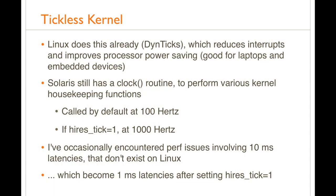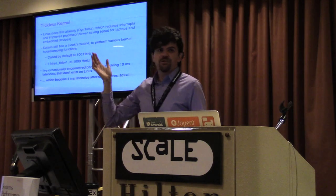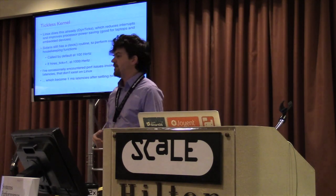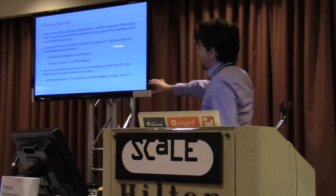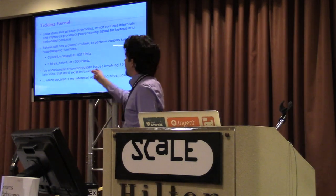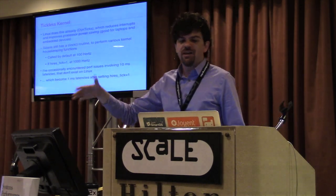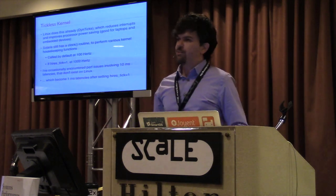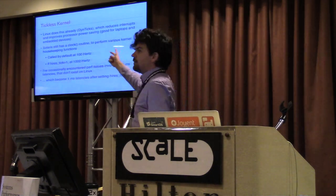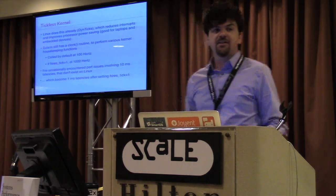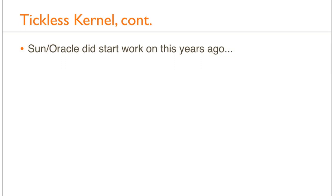Tickless kernel is another thing Solaris can learn from Linux. Linux already does dynamic ticks (CONFIG_NO_HZ), which reduces interrupts and improves CPU power saving — CPUs going to sleep aren't interrupted and woken up constantly. More importantly, I occasionally hit performance issues where a customer moved an application from Linux to SmartOS and got weird 10-millisecond latencies because they were using an older API for timeouts blocked on the tick. When we set high-res tick to one they got 1-millisecond latencies. Linux doesn't suffer this problem because it's done dynamic ticks. Sun and Oracle did start this work years ago but need to finish it.